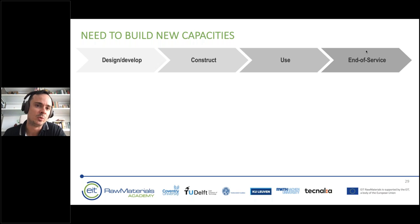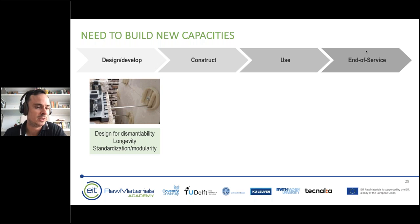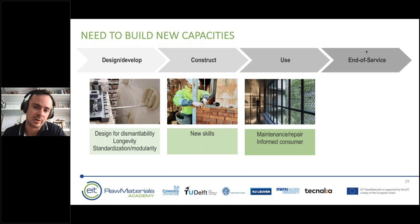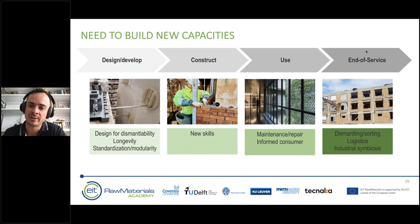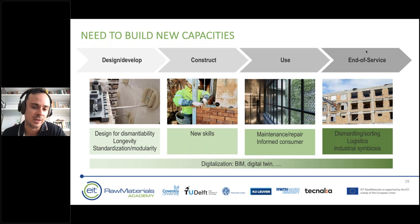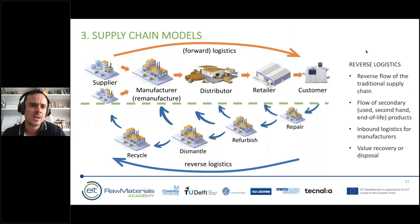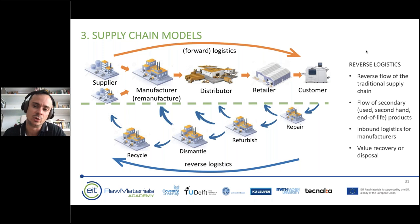To develop circular business models, companies need new capabilities: designing for dismantability, longevity, and standardization of components; training staff in disassembly without destroying parts; learning to maintain and repair products more effectively; keeping consumers informed and using their feedback; and organizing reverse logistics to reuse components. Building Information Modeling, digital twins, and the digitalization of the construction sector will play a major role in enabling all of this.